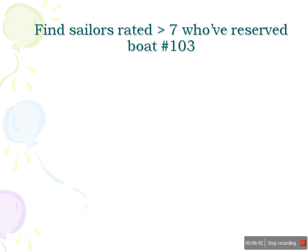Now for another query: find sailors rated greater than seven who have reserved boat ID 103. Here we need to refer to two tables — rating information from the sailors table and boat ID information from the reserves table. We will see how to write this query.